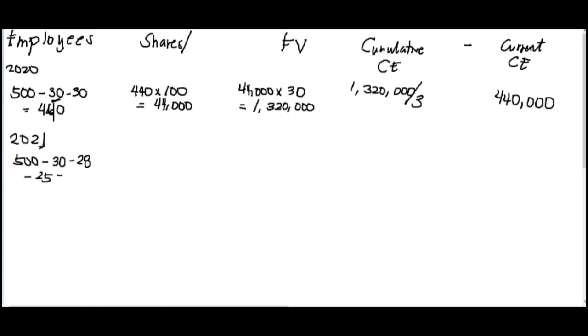So the total remaining for 2021 is actually only 417. So let's do the whole process. 417 times 100, that's per share. So you have 41,700. And then at fair value, you have 41,700 times 30 fair value. You have cumulative of 1,251,000.